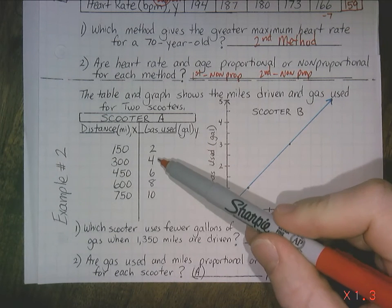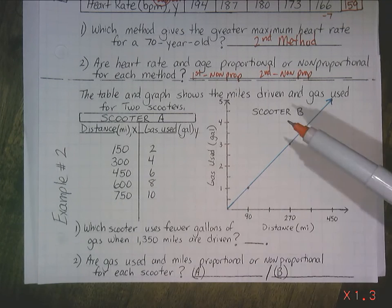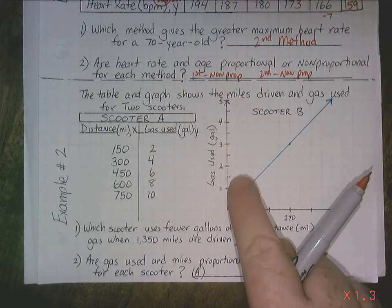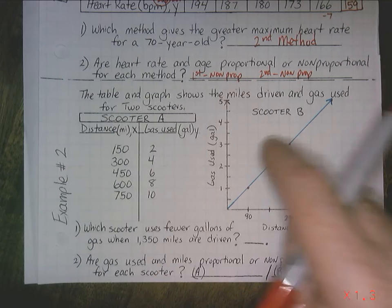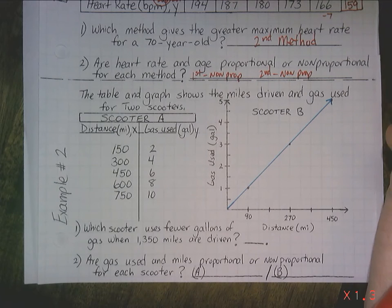Now, we can see some differences. We've got 2 gallons, 4, 6, 8, 10 gallons. We see 1 gallon, 2 gallons, 3 gallons, 4 gallons, 5 gallons, and the like.